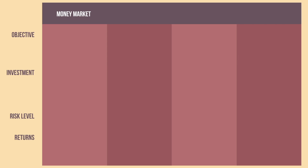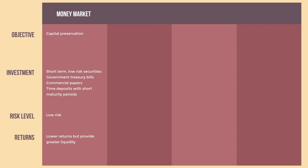It is important to assess your risk appetite when choosing a fund to invest in. Here are the different kinds of UITFs in the Philippines. Money Market UITF — its objective is to preserve capital while providing a modest level of income. They are suitable for conservative investors who prioritize safety and liquidity over high returns. These funds invest in short-term, low-risk securities such as government treasury bills, commercial papers, and time deposits with short maturity periods. Money Market UITFs are considered low-risk and typically offer lower returns but provide greater liquidity.